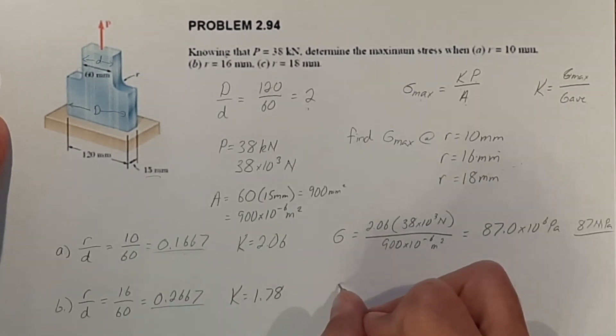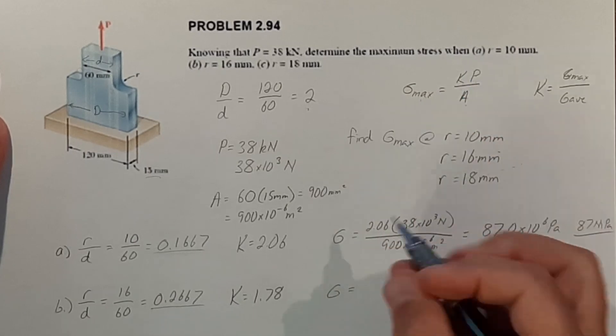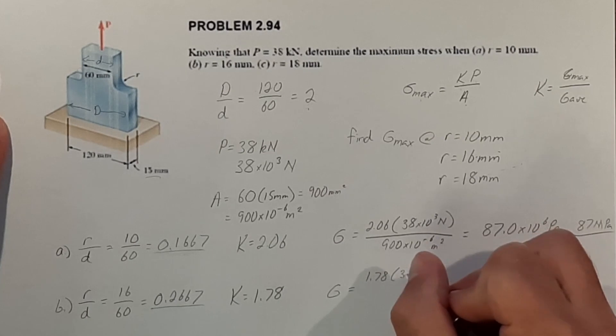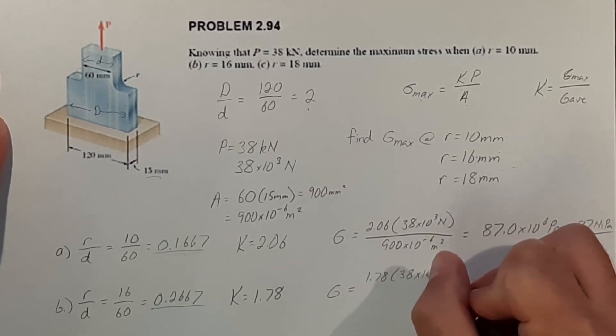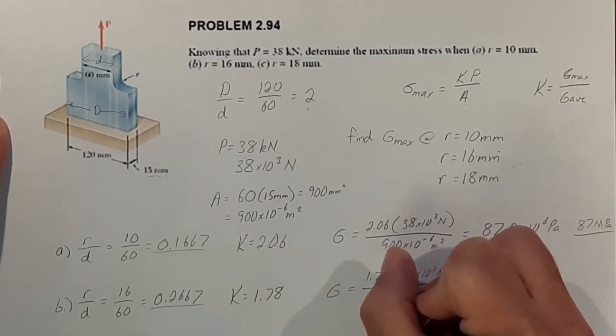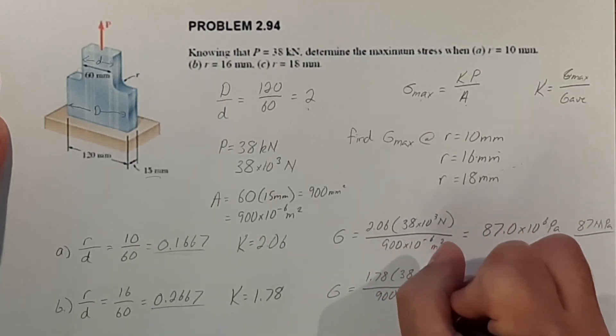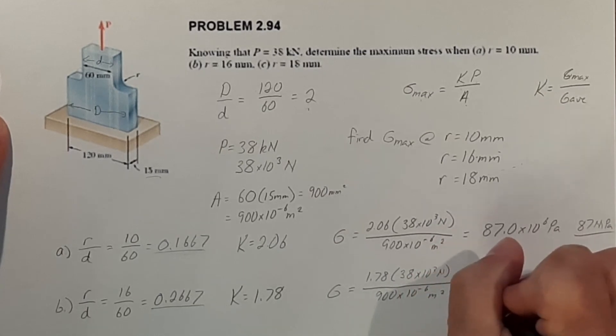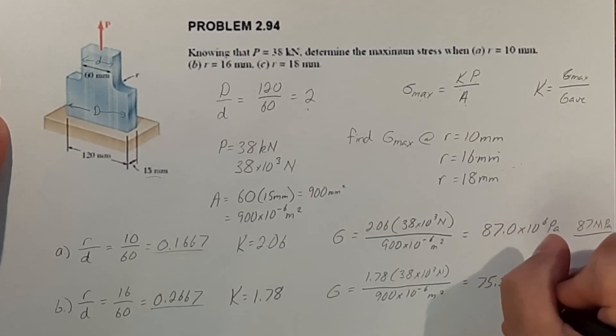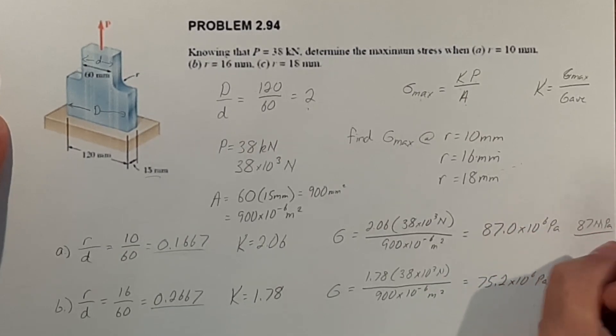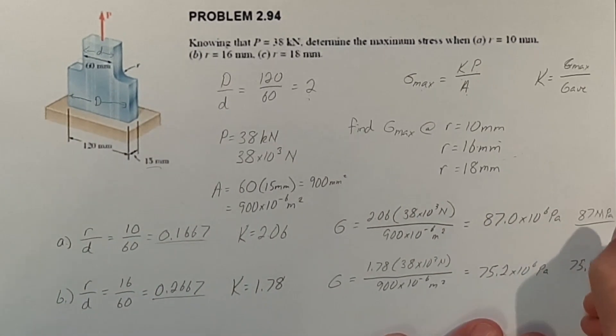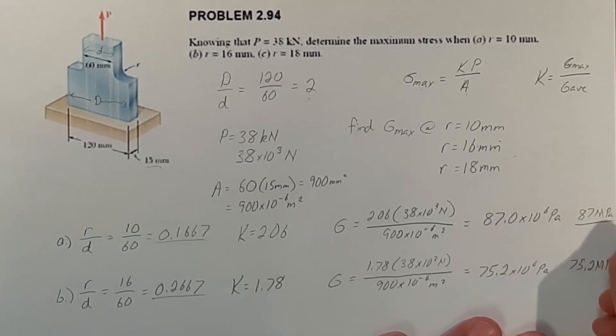And again, putting all this into our equation here, 1.78 times 38 times 10 to the 3rd newtons over 900 times 10 to the negative 6 meters squared. And that's going to give us a value of 75.2 times 10 to the 6th pascals or 75.2 megapascals.